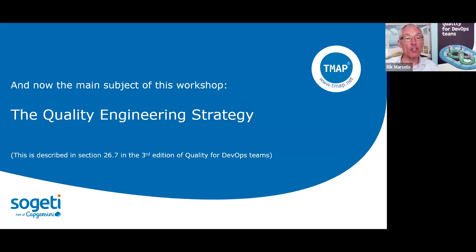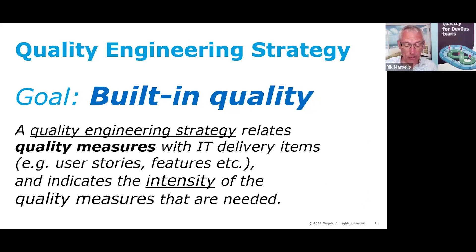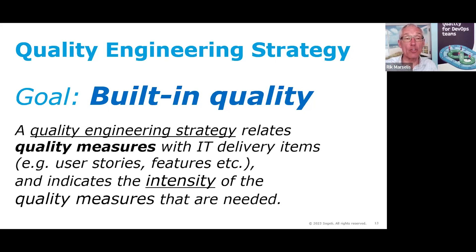The goal of the quality engineering strategy is built-in quality. The strategy relates quality measures with IT delivery items — such as user stories — and indicates the intensity of those quality measures. An important aspect is that you don't approach everything with the same intensity: high risks need higher-intensity quality measures, and low risks need lower intensity. That's essentially what the whole quality engineering strategy is about.